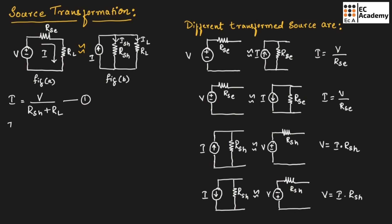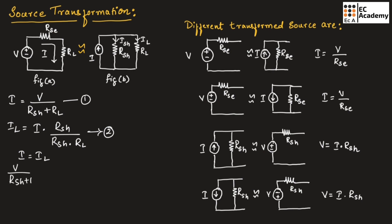Load current IL can be given as I multiplied by RSH divided by RSH plus RL. Let us call this equation number two. If we take I equal to IL, we can write V divided by RSH plus RL is equal to I multiplied by RSH divided by RSH plus RL.